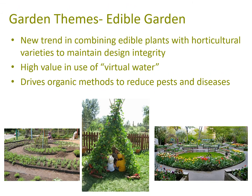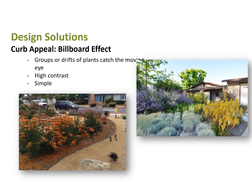Edible gardens are ever more popular — there's a new trend in combining edible plants with horticultural plants to maintain design integrity. Edibles tend to use a bit more water than low water plant species, but you're also producing food, harvesting it, and limiting emissions from transportation, accomplishing sustainability in other ways. If incorporating edibles, explore organic methods to reduce pests and diseases instead of relying on chemicals.